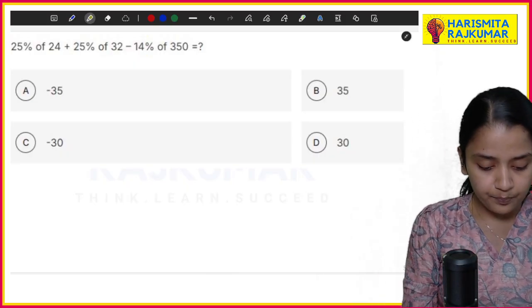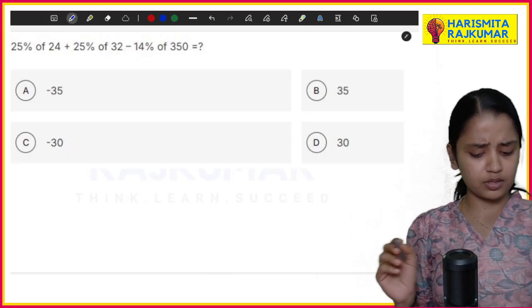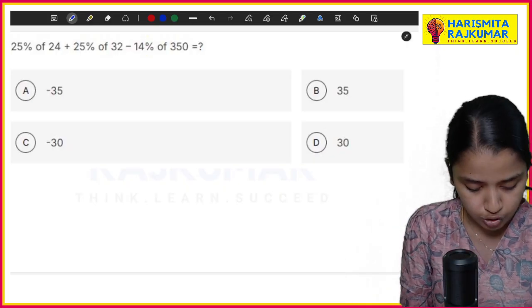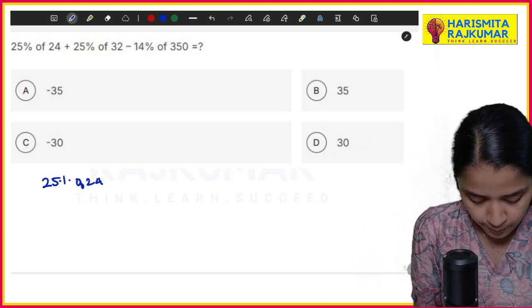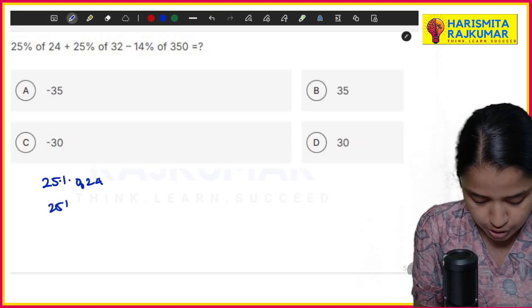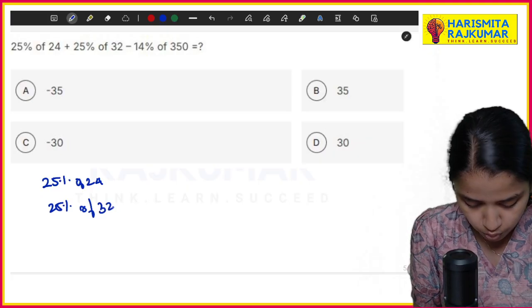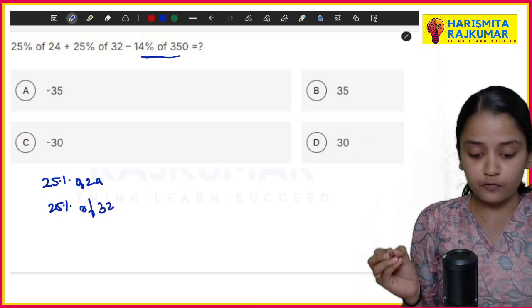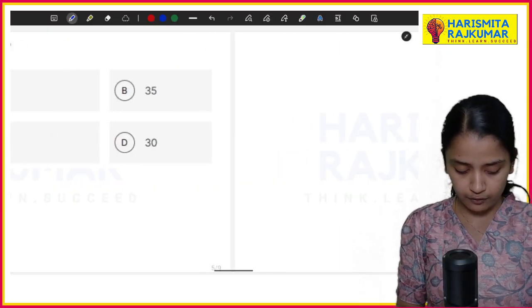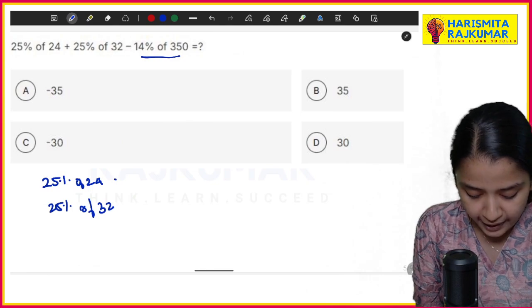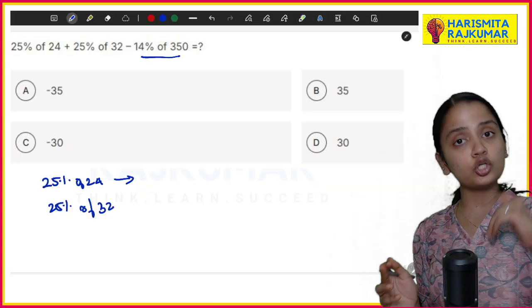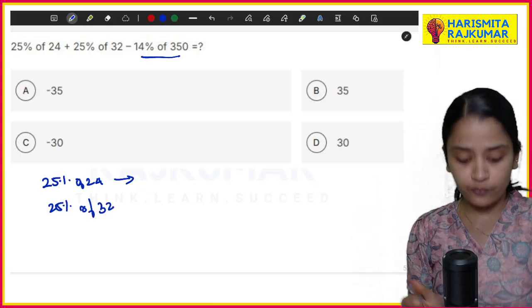Now you are supposed to find the answer for 25% of 24 + 25% of 32 - 14% of 350. 25% of 24 means I have to divide the whole by 4. So 24 ÷ 4, I'm getting 6.